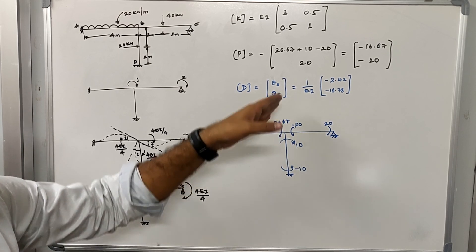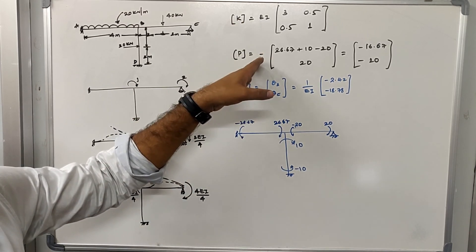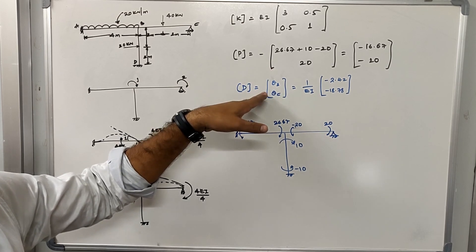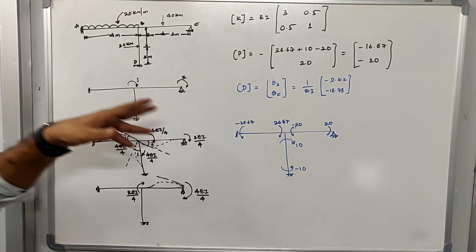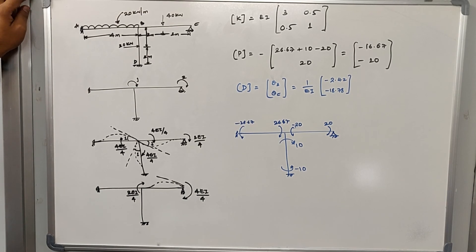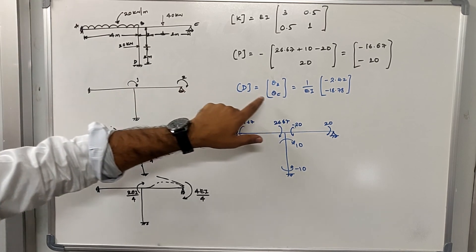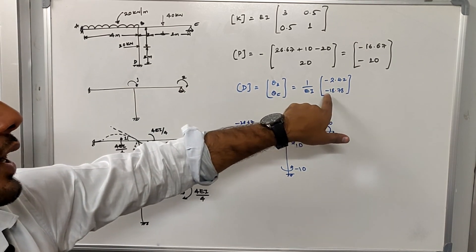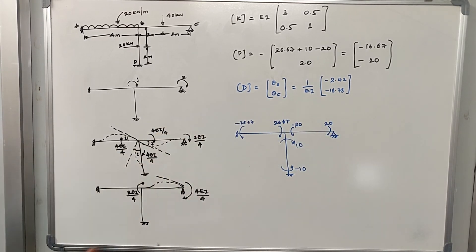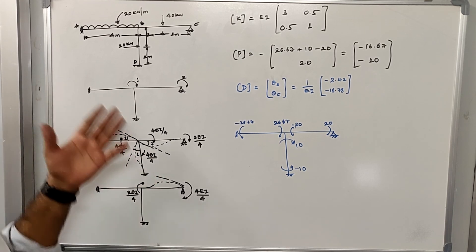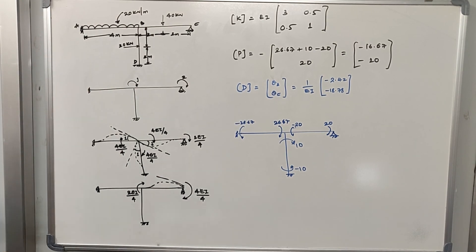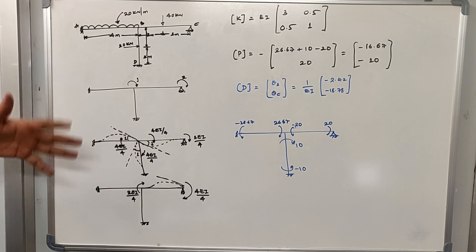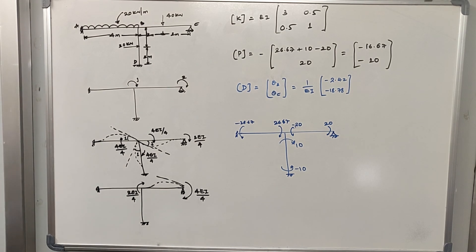To solve the displacement matrix, we compute the inverse of the stiffness matrix multiplied by the force matrix. Solving gives EI·θ_B = −2.42 and EI·θ_C = −18.78. You should verify this solution using the slope deflection equations and also solve the end moments for this problem, comparing the values obtained by both the stiffness method and the slope deflection method.